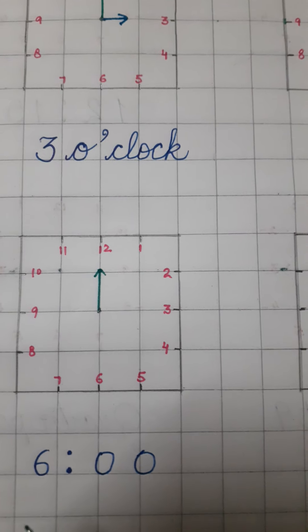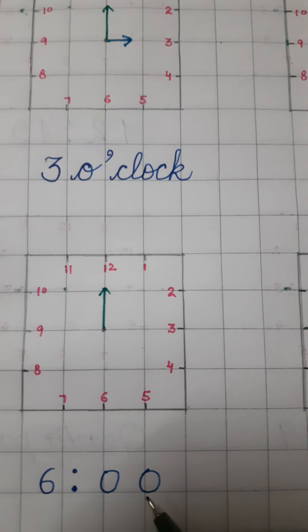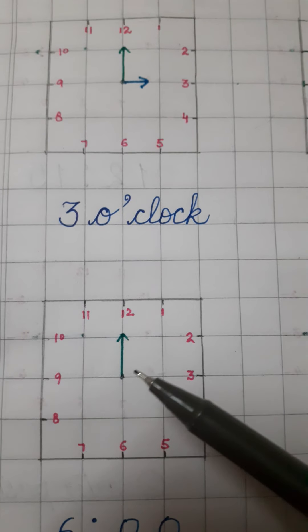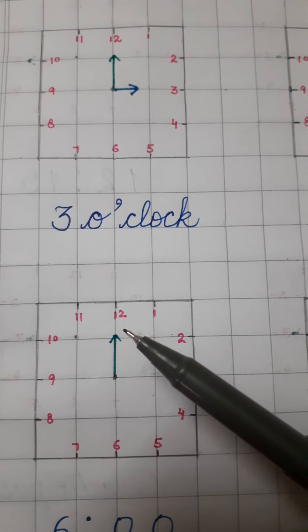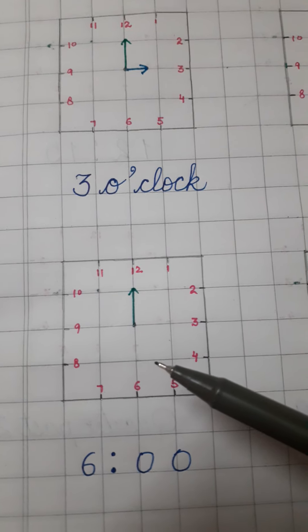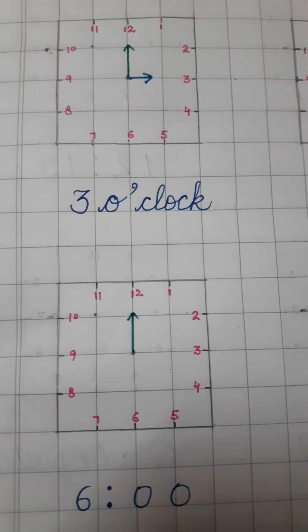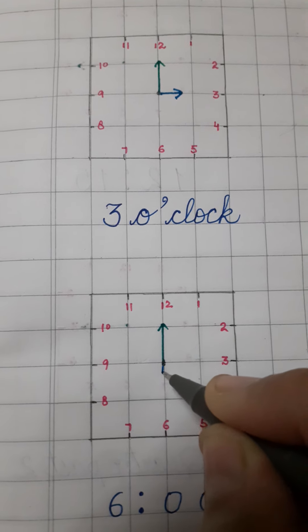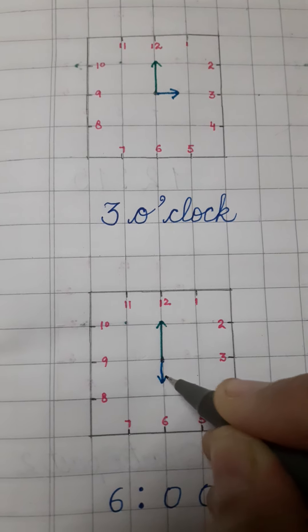This one, they are asking for 6 o'clock. Now, as it is o'clock, so I have drawn the long hand towards the 12. Now, I have to draw the short hand. Now, where to draw the short hand? Towards the 6. So, I will draw towards the 6.